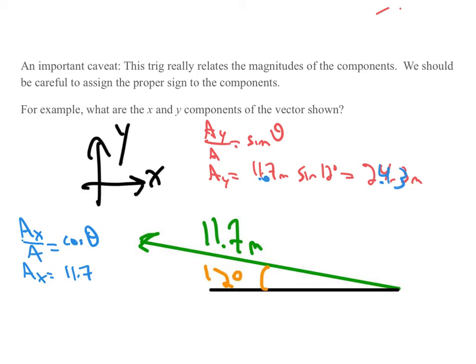11.7 meters times the cosine of 12 degrees, which is 11.4 meters, give or take. But we know there's a problem because we should have that a_x is negative. So we'd have to just put that sign on. We'd say, really, it's minus that.